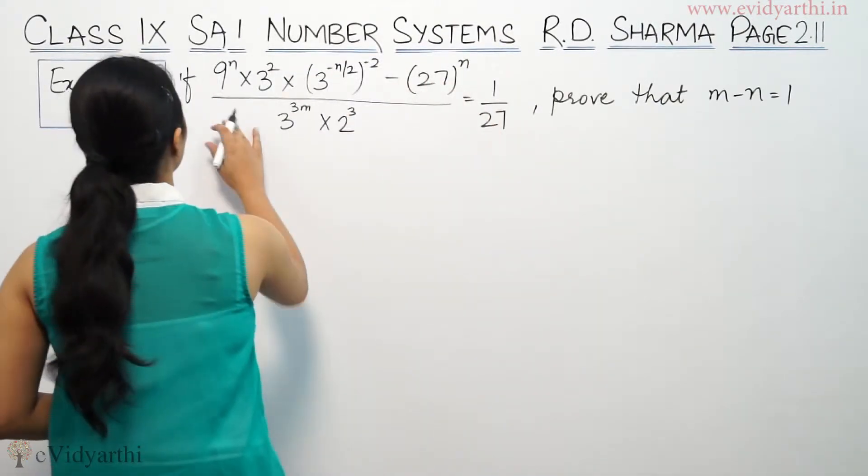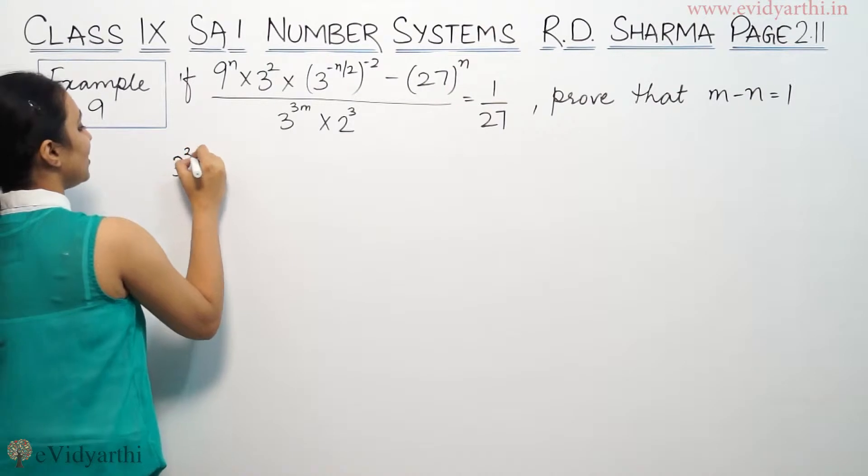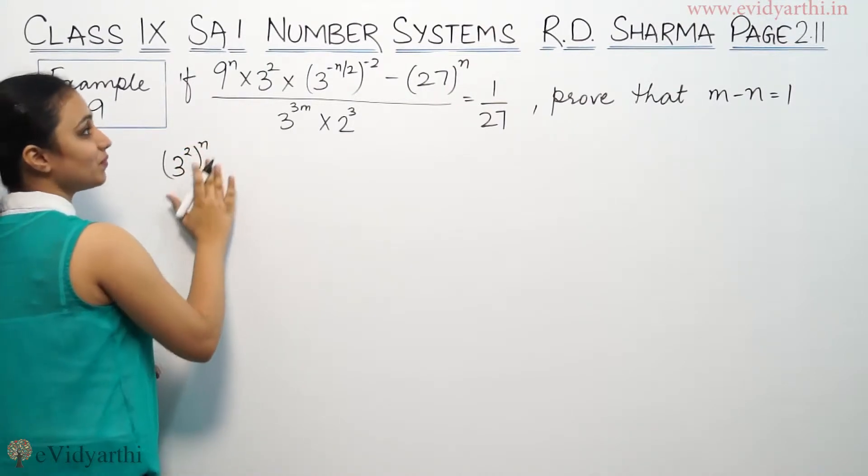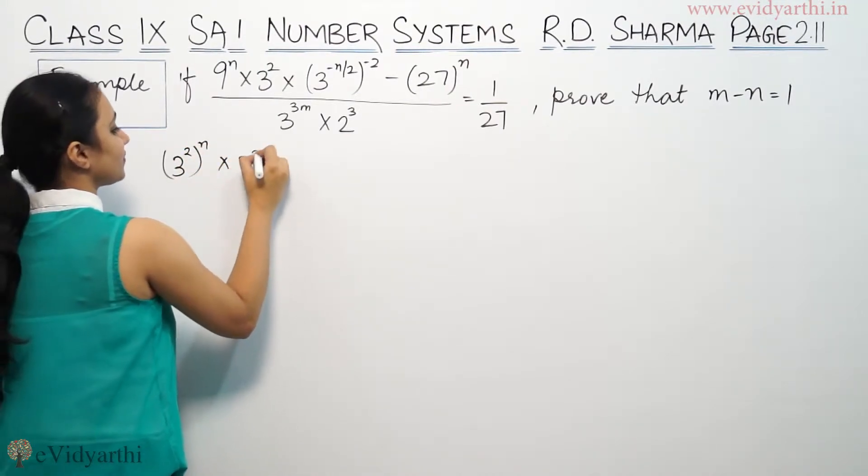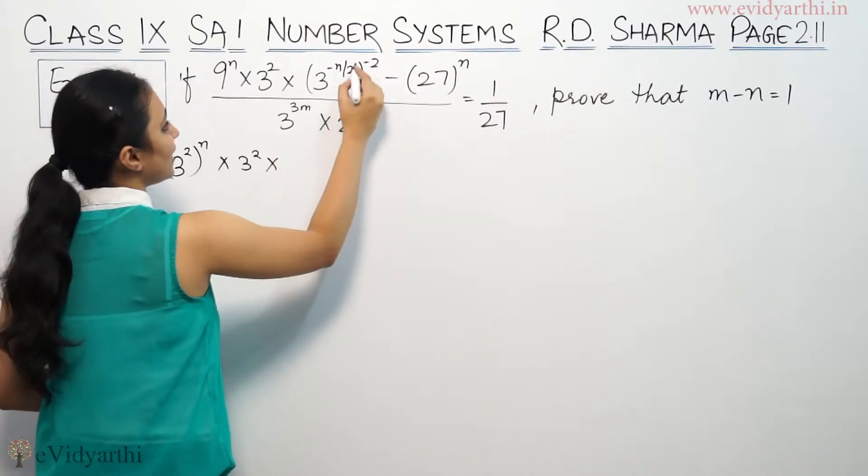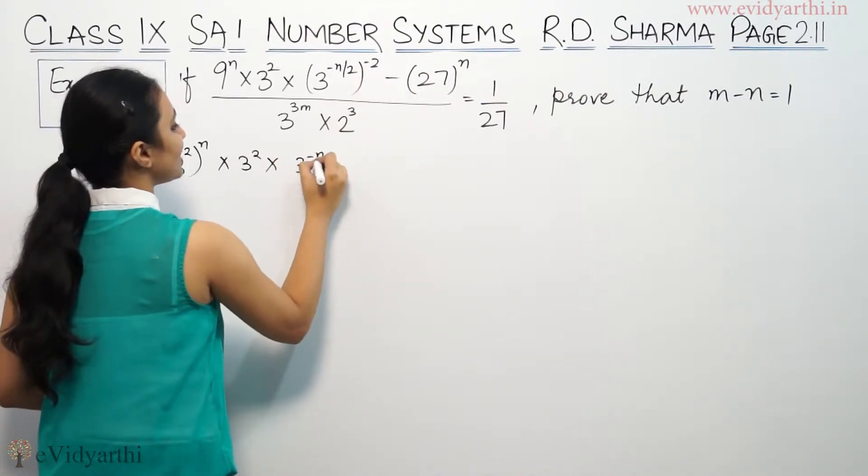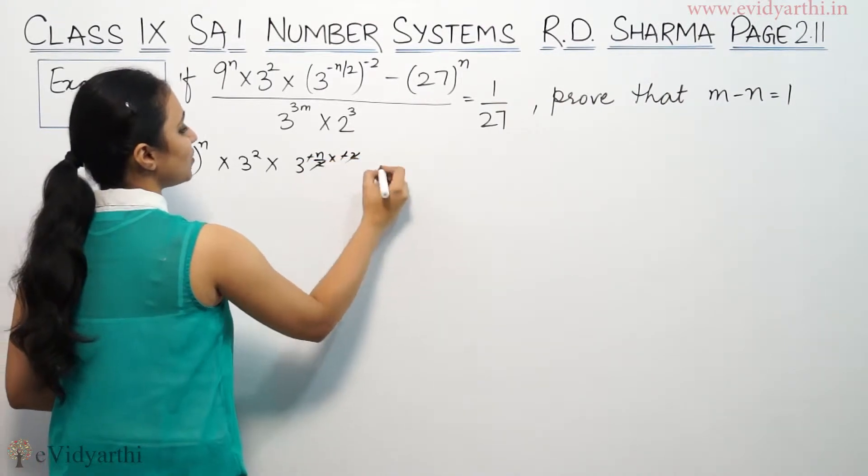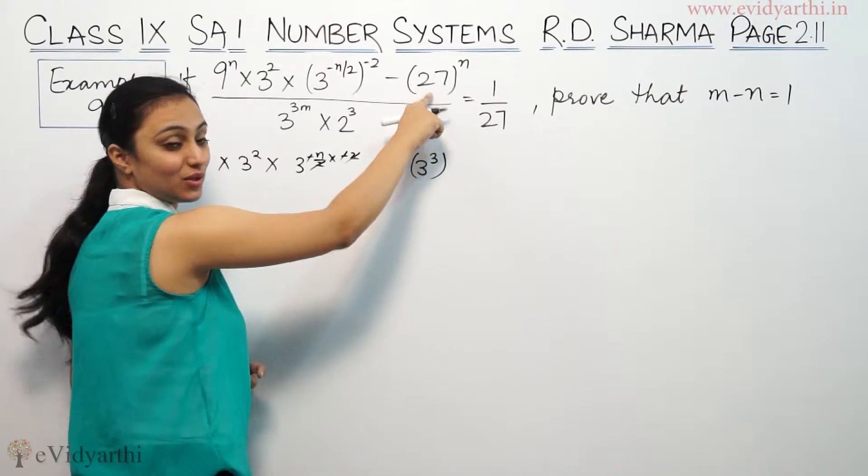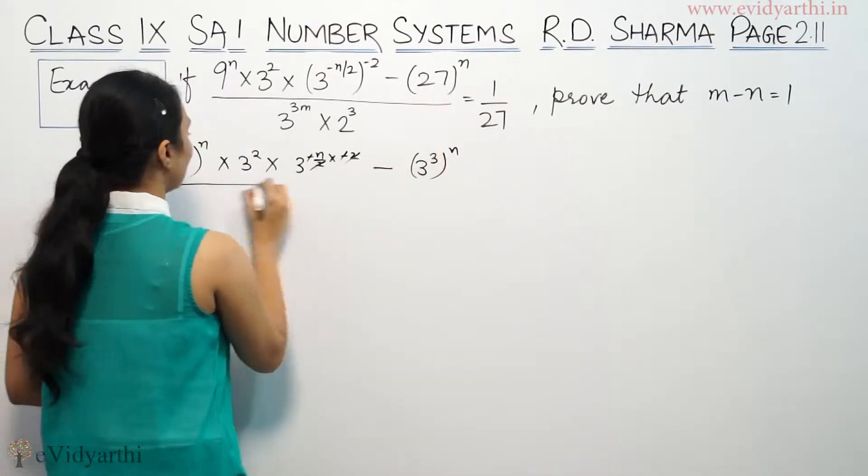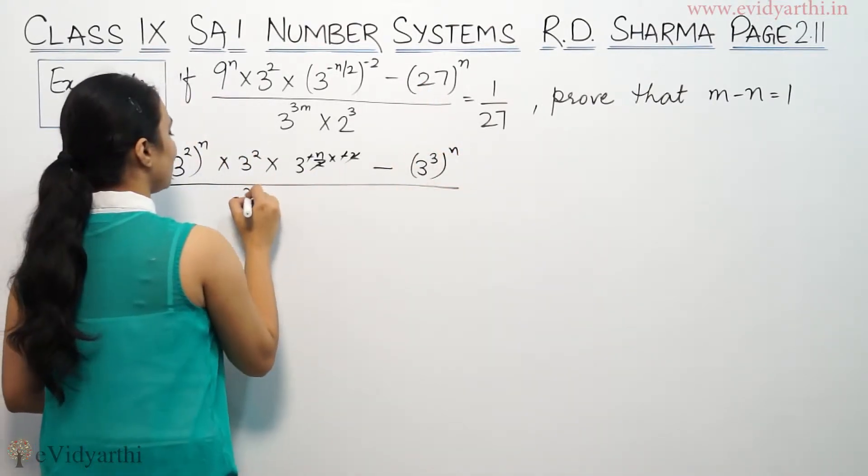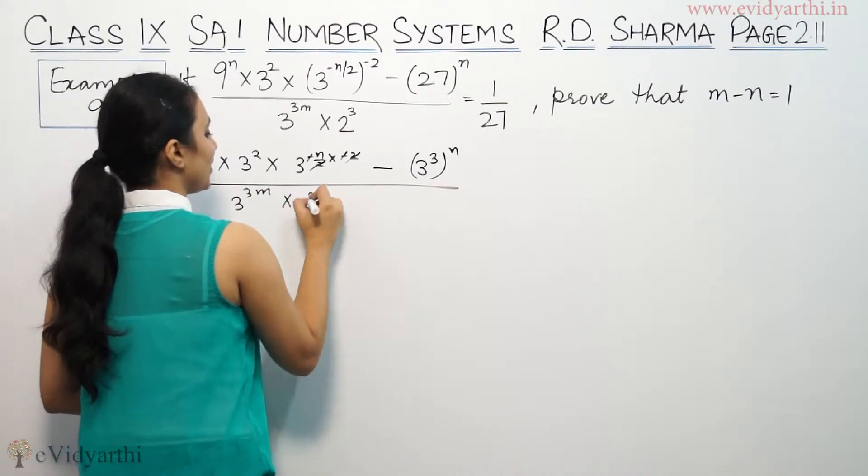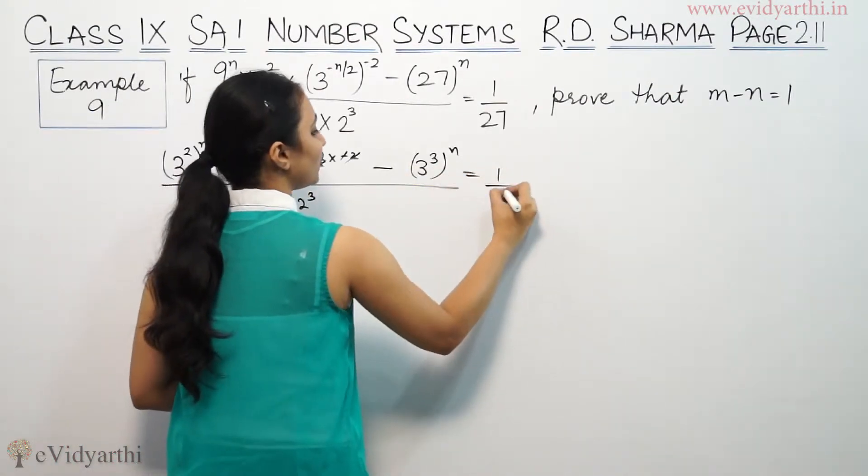So we start with 9^n × 3² × 3^(-n/2) × 4^(-2) minus 27^n upon 3^(3m) × 2³ equals 1/3³. Since 9 is 3², this becomes 3^(2n).